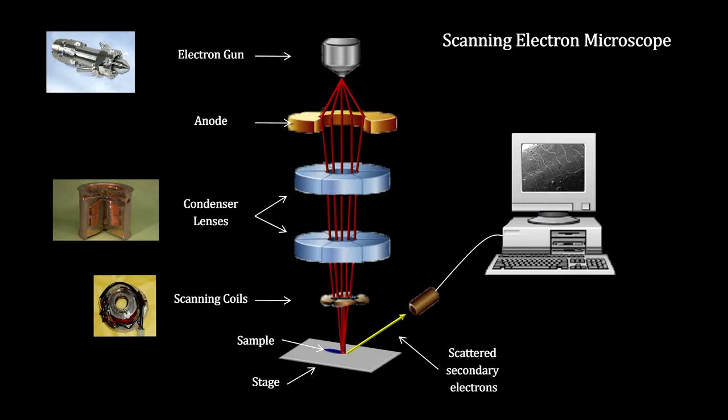In our How Small Is It chapter on the microscopic, we covered scanning electron microscopes that mapped the surface of an object by using the wave nature of electrons and analyzing their scattering properties.